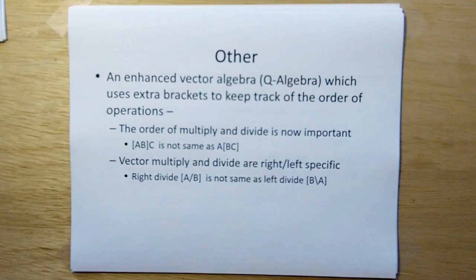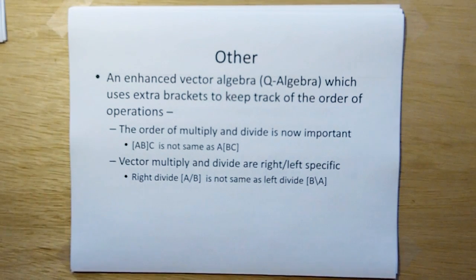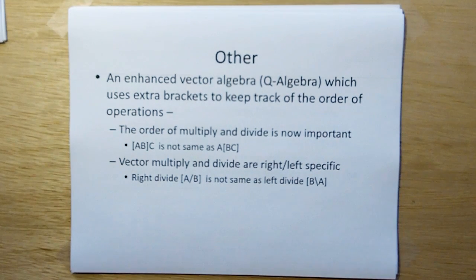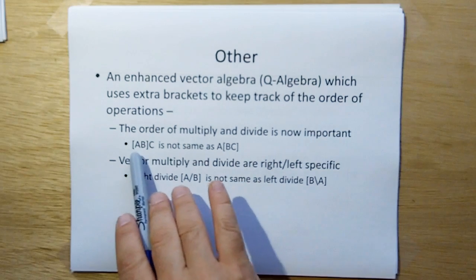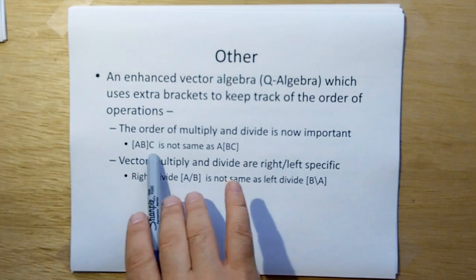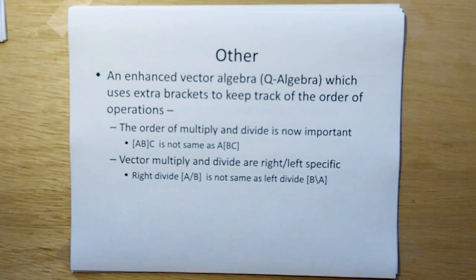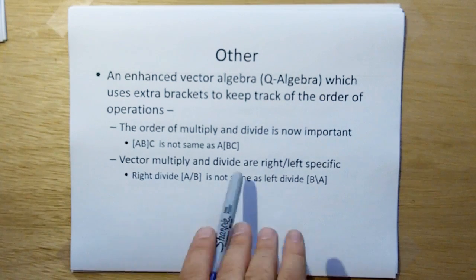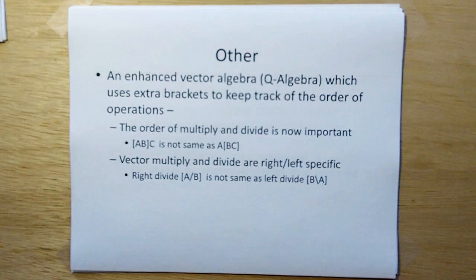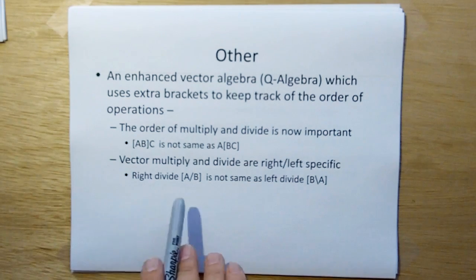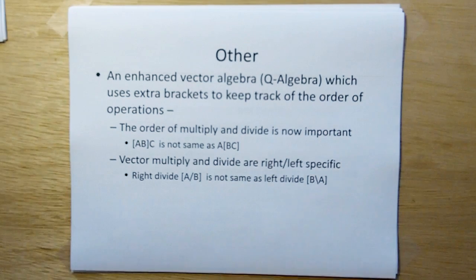Also, the other byproduct of all this work is enhanced vector algebra. A way of handling vectors which uses extra brackets to keep track of the order of operation, because now the order of operation of multiply and divide is important. Vector A multiplied by B multiplied by vector C is not the same as B times C and then multiply by A. And also vector multiply and divide are now right and left specific. You can have a right divide and that's not the same as a left divide.